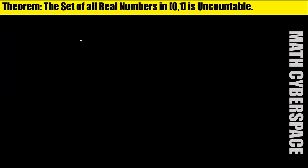Let's look at the proof of this important theorem. The statement of the theorem is: the set of all real numbers in the closed interval [0,1] is uncountable. In a previous video I showed that the set of all rational numbers is countable. Here we will prove that the set of real numbers in the closed interval [0,1] is uncountable.